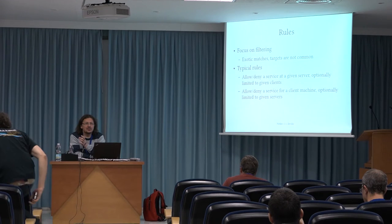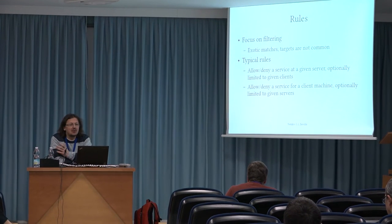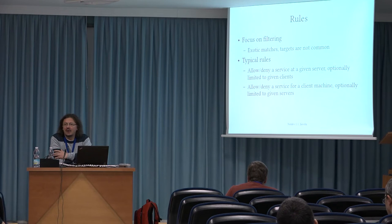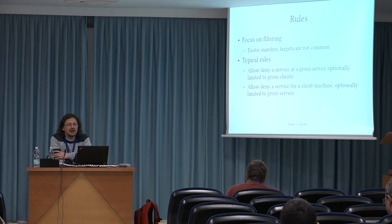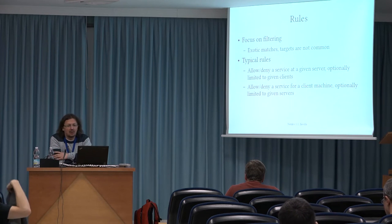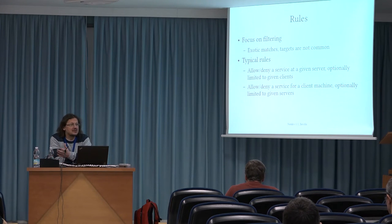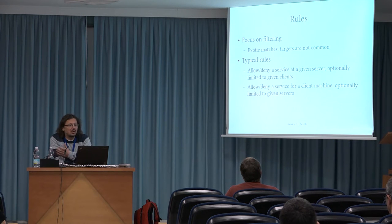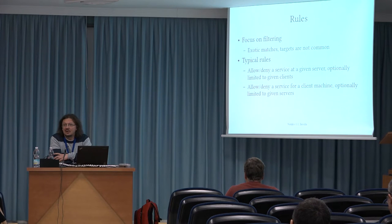Let's focus on the most common cases. Usually we have a large number of rules in the filter table where we implement and express our network security policy. The typical rules in the filter table say which IP address or net block has access or denied access to a given service running on a given IP address or net block. So we match on the protocol and port numbers, the source and destination addresses, in a large number of rules.